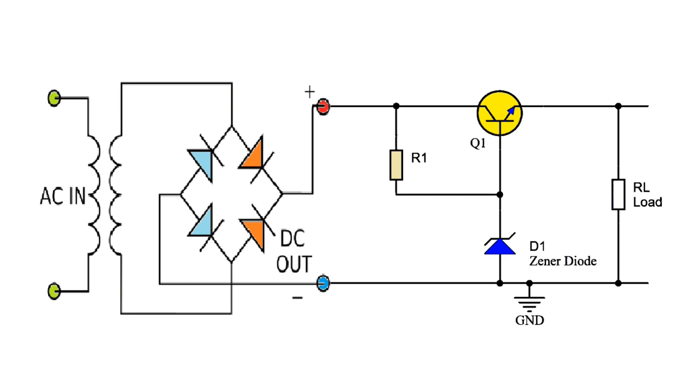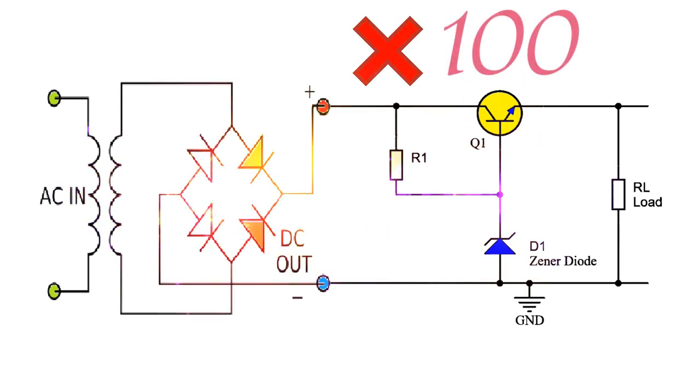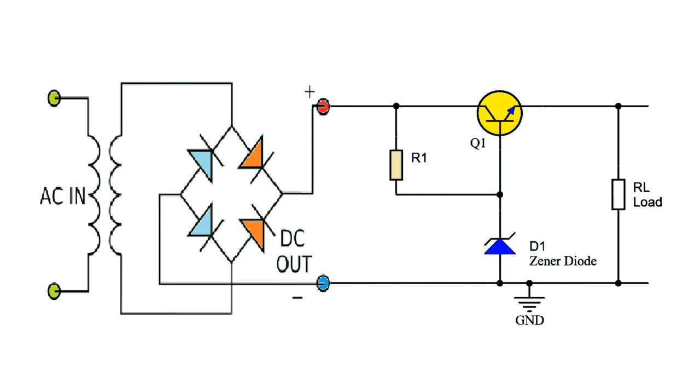In this power supply you can see that we have used only 10mA of Zener diode current. But the Zener can supply a load of about 1A. This is due to the transistor because the transistor amplifies the diode current by 100 times. Therefore, it is more efficient than using a Zener diode.